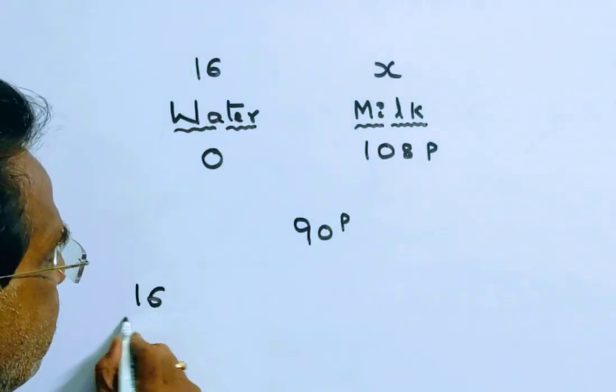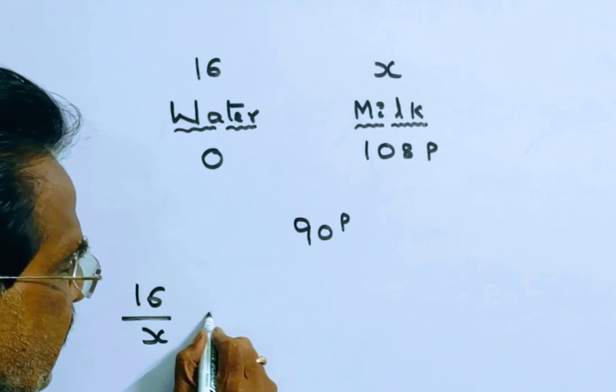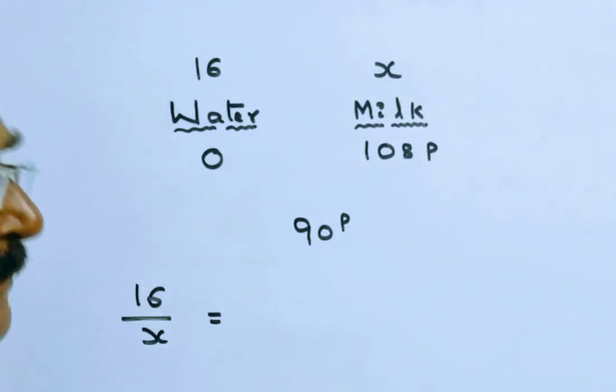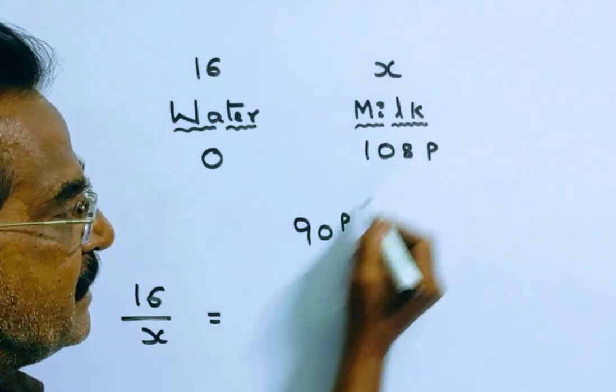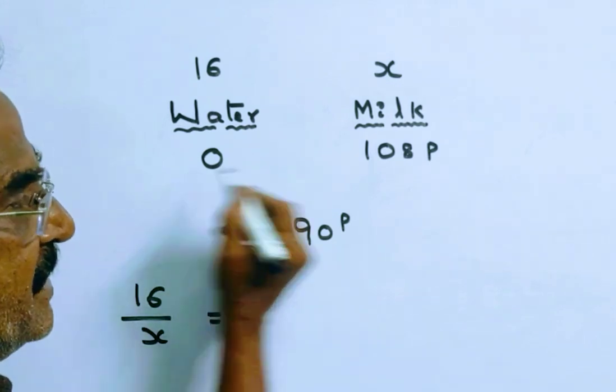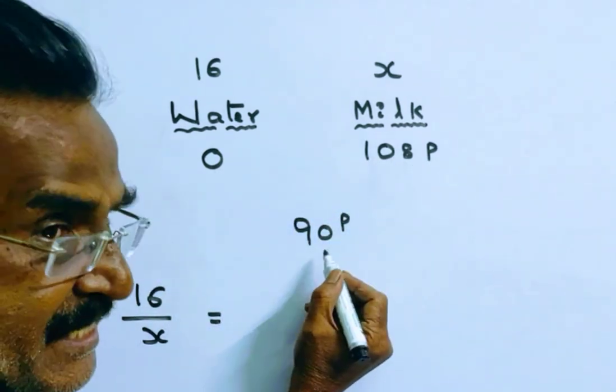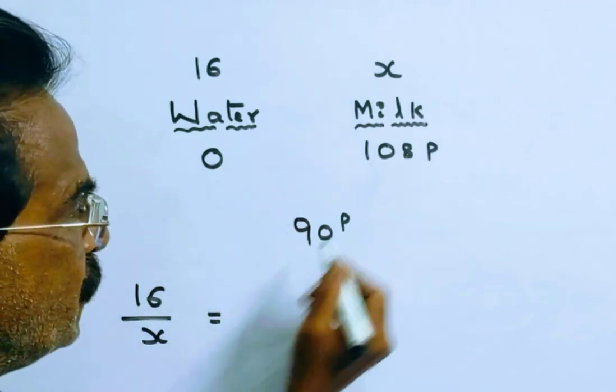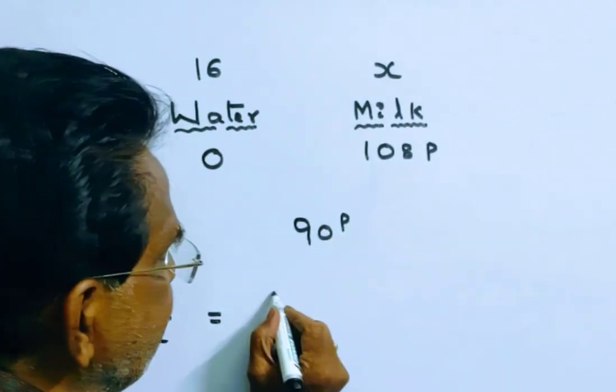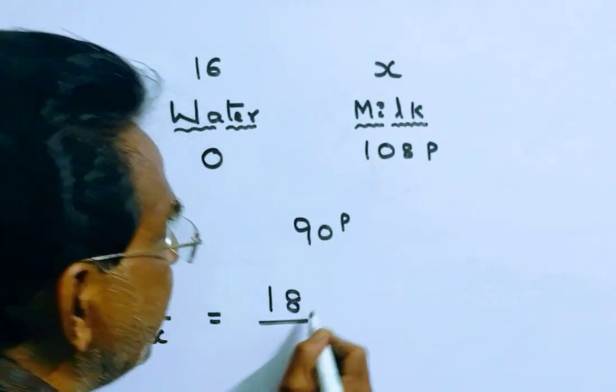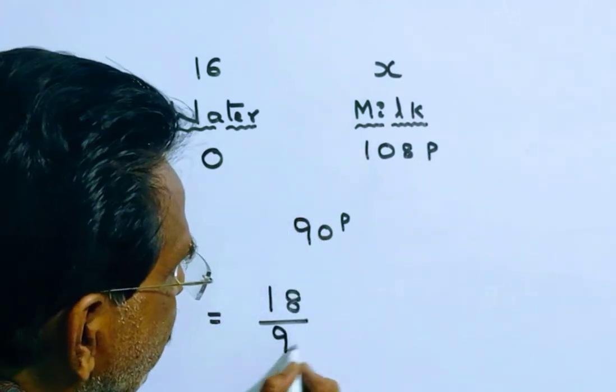The quantities ratio is 16 by x. By the rule of allegation, this equals dearer minus mean by mean minus cheaper. That is, 108 minus 90 is 18, by 90 minus 0 is 90, giving us 18 by 90.